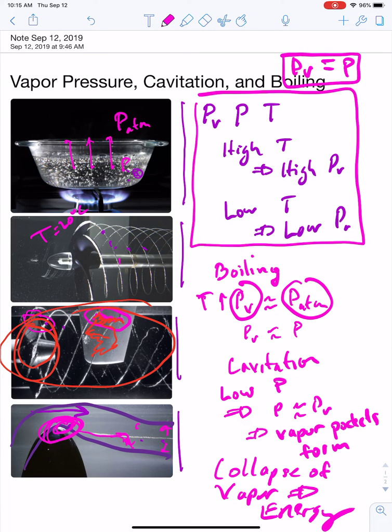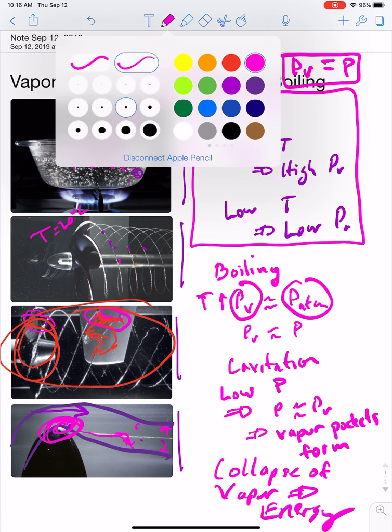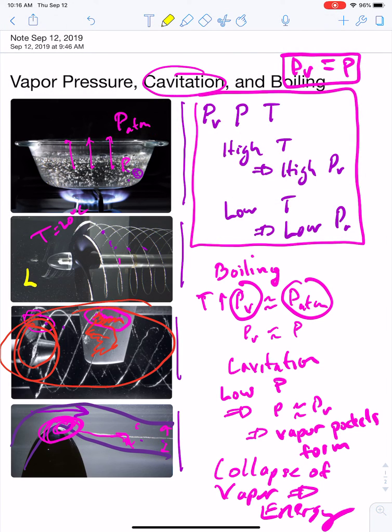So in the case of cavitation, what's happening is that the vapor pressure is small, but the fluid pressure is getting really low. So in this case, maybe just right here, that what we have is, in this case, we have low p.